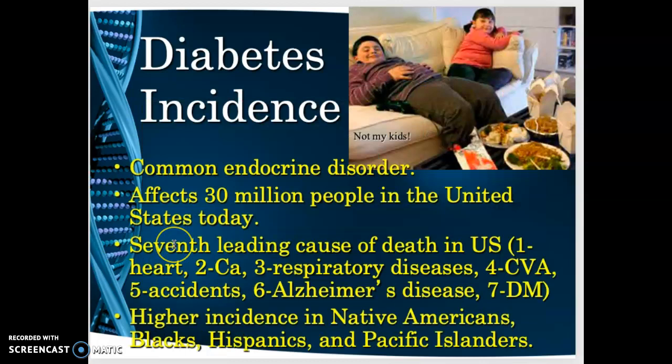Diabetes is a very common endocrine disorder affecting over 30 million people in the United States. It's the seventh leading cause of death, behind heart disease, cancer, respiratory diseases, strokes, accidents, and Alzheimer's disease. Diabetes has a higher incidence in Native Americans, Blacks, Hispanics, and Pacific Islanders.